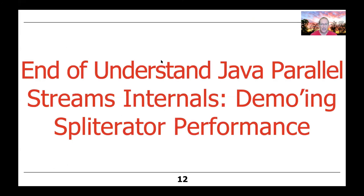That's the end of the example demonstrating spliterator performance. Hopefully you now have a better sense that the type of collection or data source you use can have a big impact on performance, because collections that split evenly and efficiently will typically work better and scale better when used with parallel streams than ones that don't.